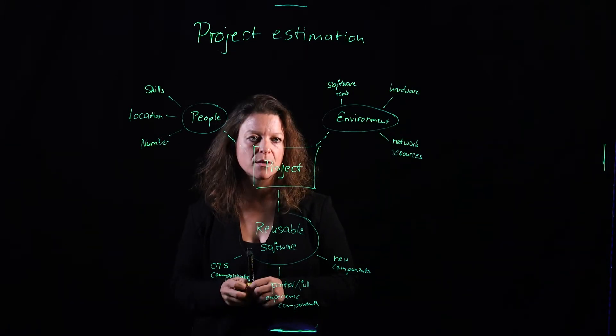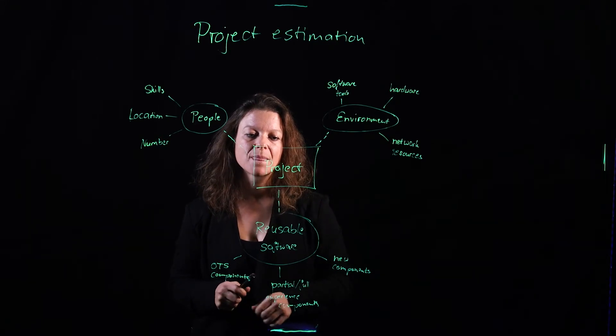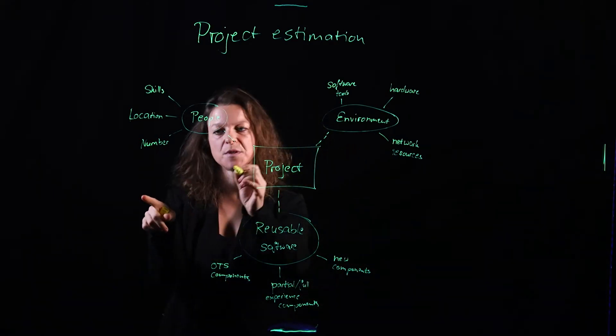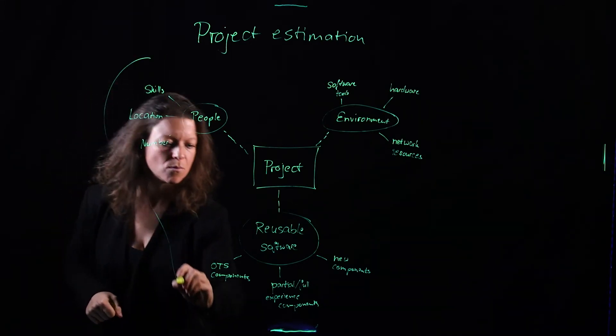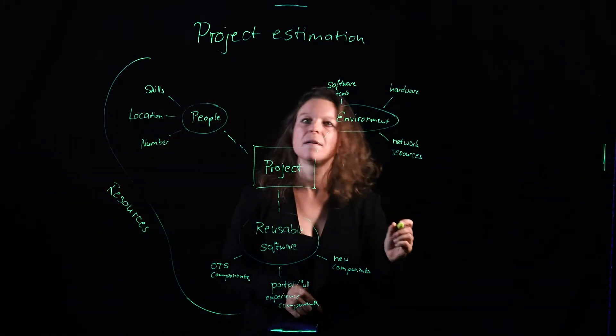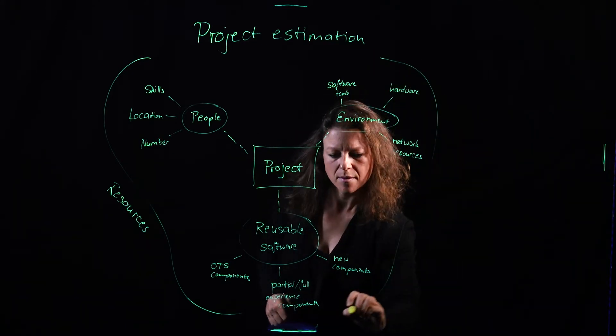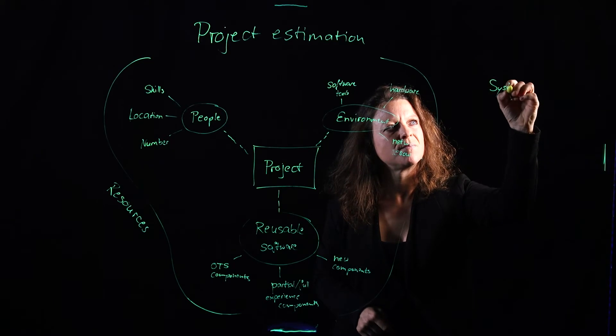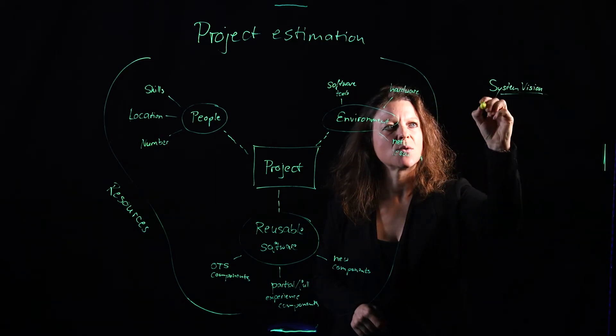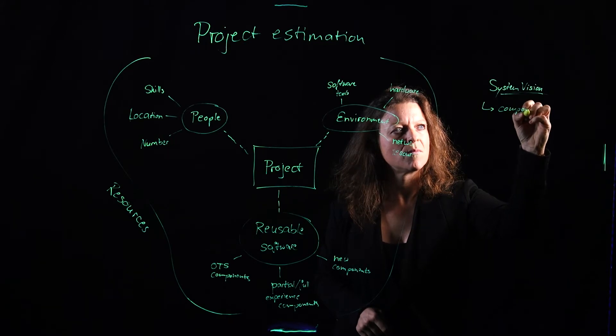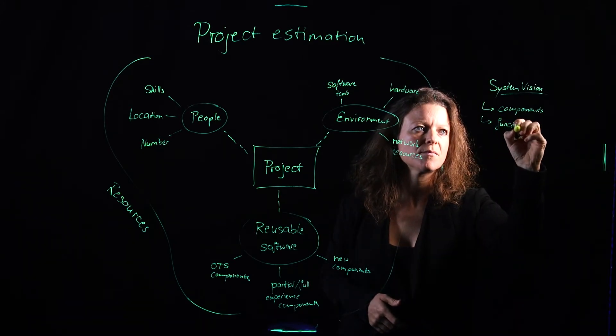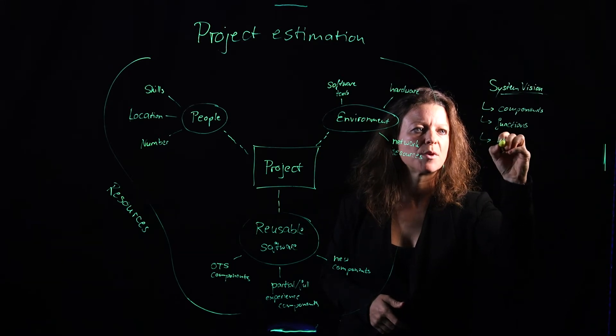And then based on all of these resources, I'll look at the system vision that I have for my project. So all of these are the resources and then I take my system vision that I agreed on with the customer and I can break it down into components. I can maybe break those components down into functions. Or if that is not possible, I can break them down into use cases.